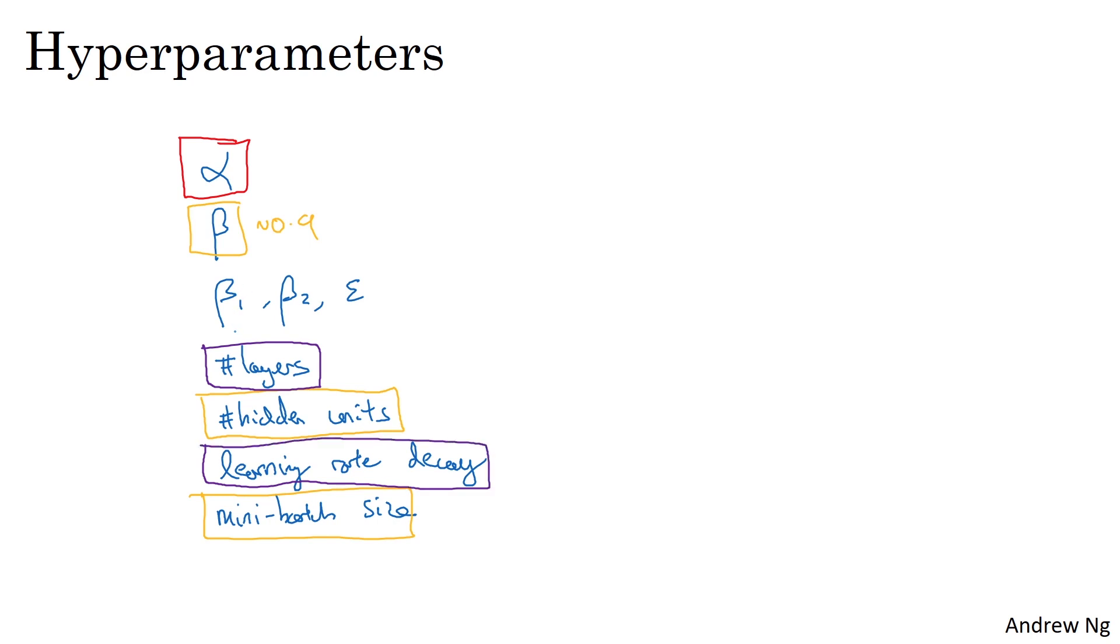And then when using the Adam algorithm, I actually pretty much never tune beta 1, beta 2, and epsilon. Pretty much always use 0.9, 0.999, and 10 to the minus 8.